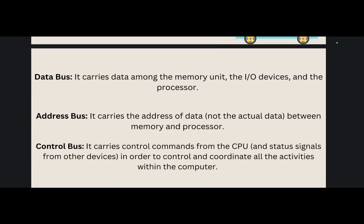The address bus carries addresses from the processor to other components such as primary storage and input/output devices. The address bus is unidirectional. The control bus carries signals from the processor to other components and also carries clock pulses. The control bus is also unidirectional.